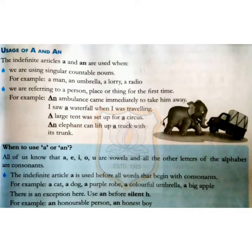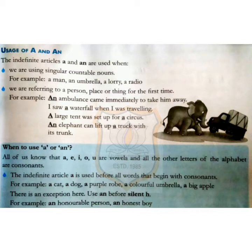Usage of A and An: The indefinite articles A and An are used with singular countable nouns — for example, a man, an umbrella, a lorry, a radio. They are also used when referring to a person, place, or thing for the first time. For example: 'An ambulance came immediately to take him away.' 'I saw a waterfall when I was traveling.' 'A large tent was set up for a circus.' 'An elephant can lift up a truck with its trunk.'